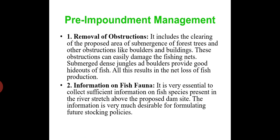Pre-impoundment management includes clearing the proposed area of submergence of forest trees and other obstructions like boulders and buildings, which can damage fishing nets. Submerged dense jungles and boulders provide hideouts for fish, resulting in net loss of fish production. After removal of obstructions, it is essential to collect information on fish fauna — the fish species present in the river stretch above the proposed dam site — for formulating future stocking policies.